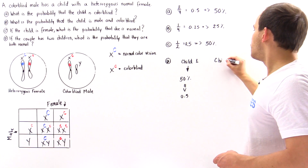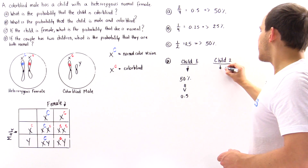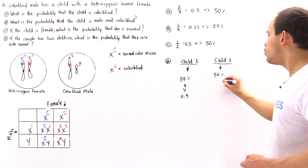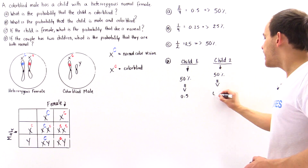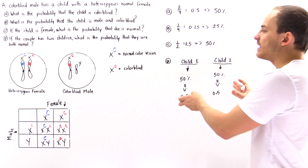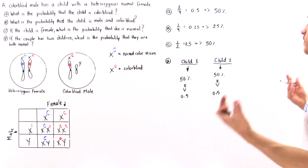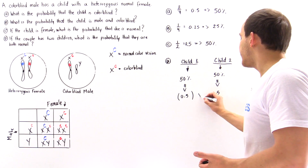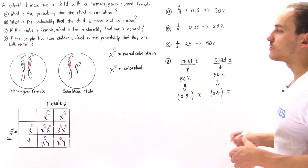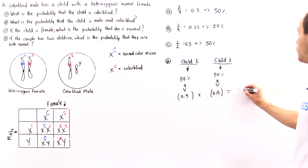For child number two, by the same reasoning, there is also a 50% likelihood of being normal, giving a probability of 0.5. Because these two events do not depend on one another — they are independent — we must multiply these two probabilities together. This is known as the product law.